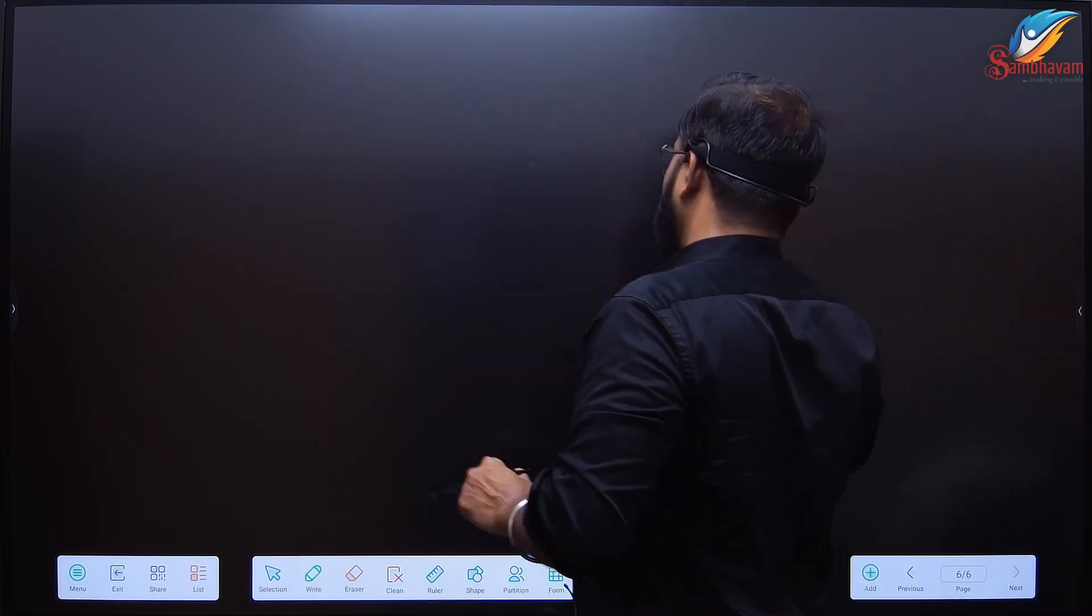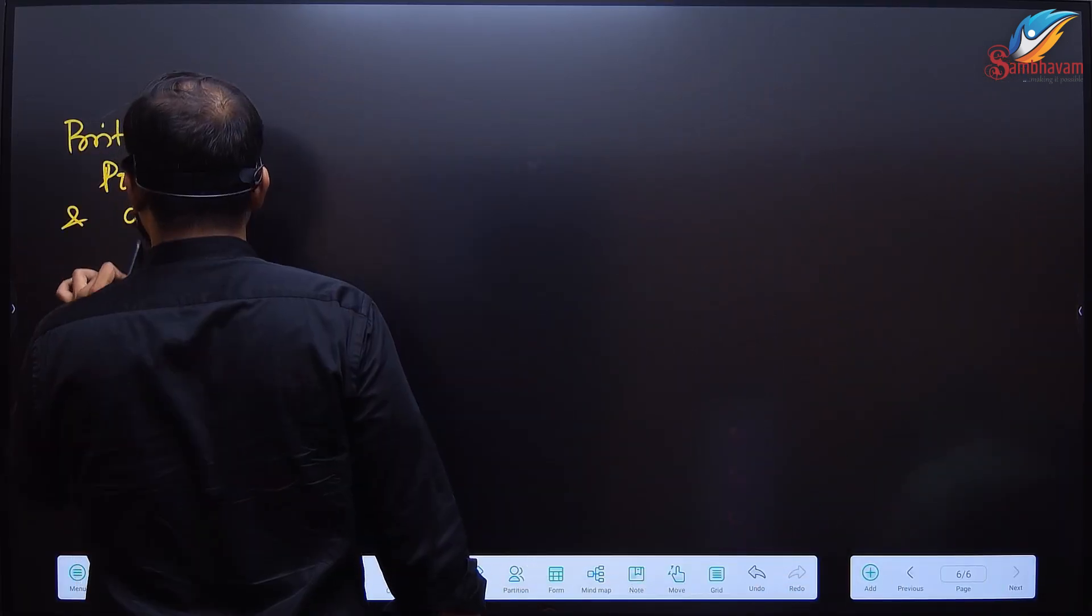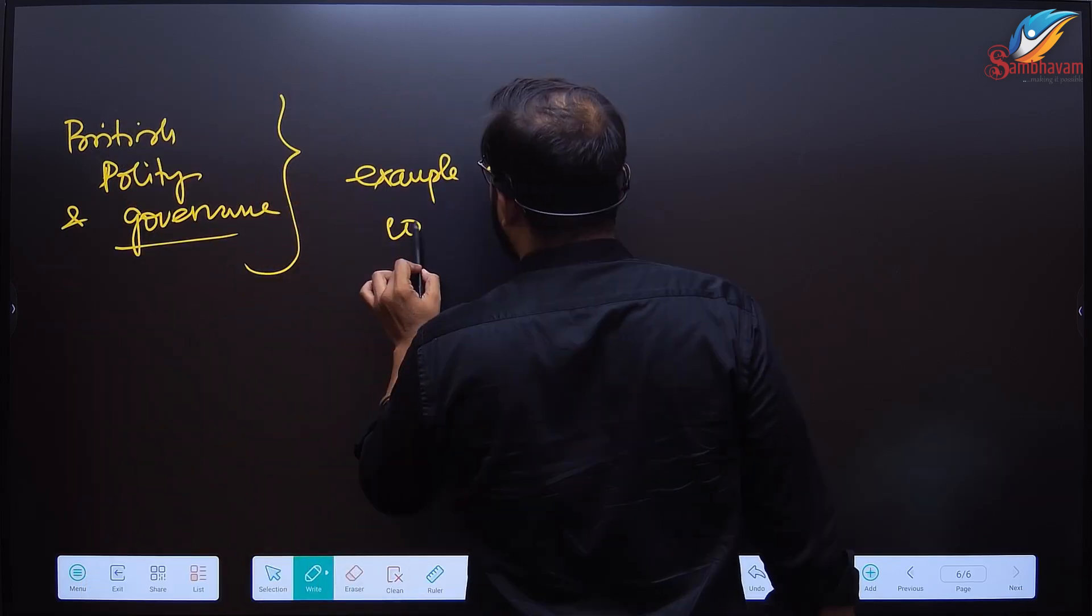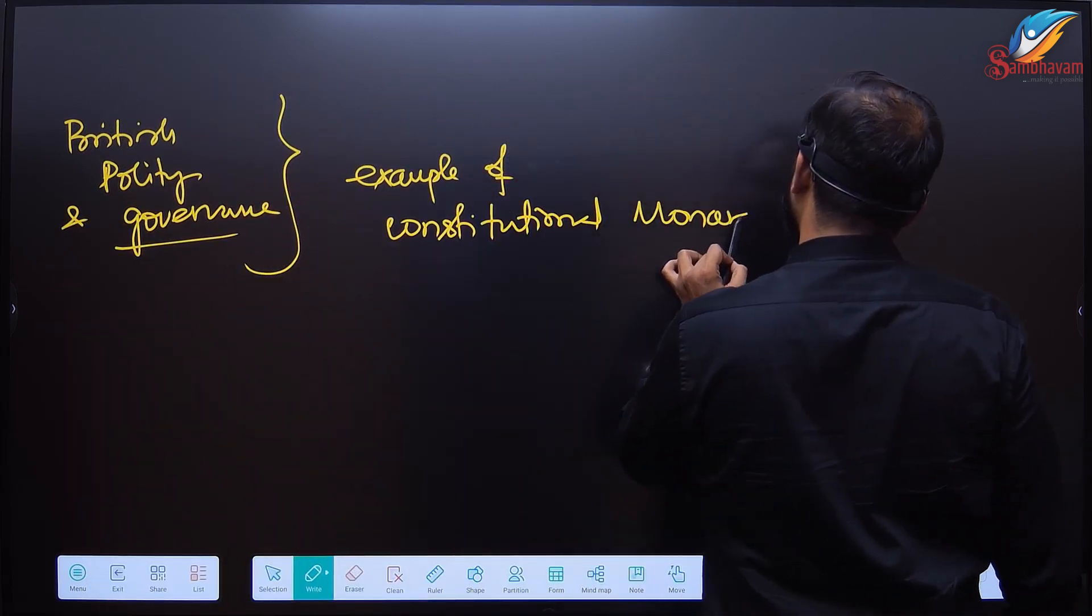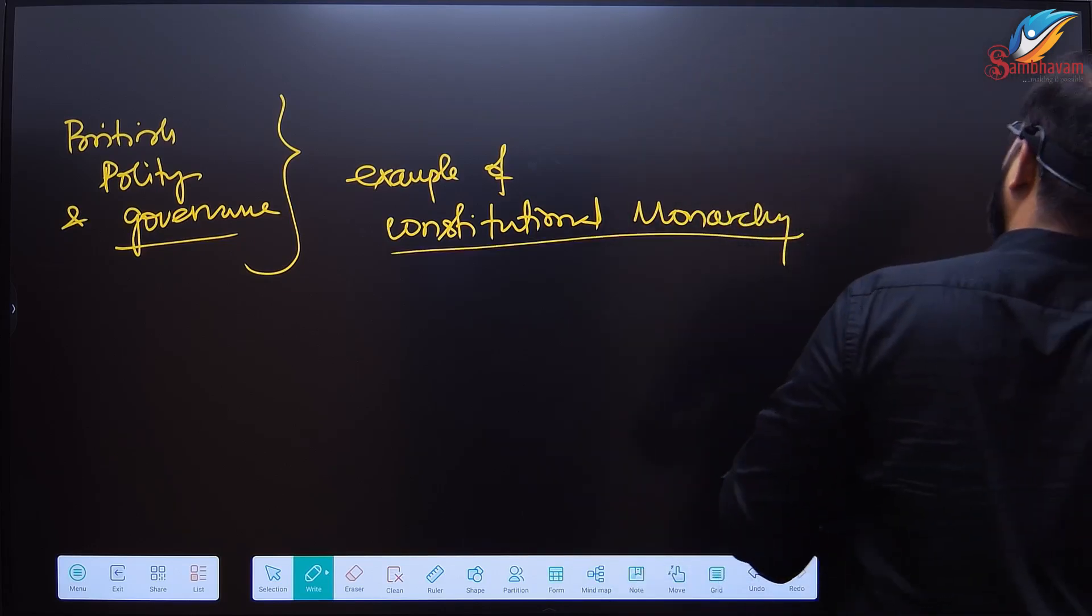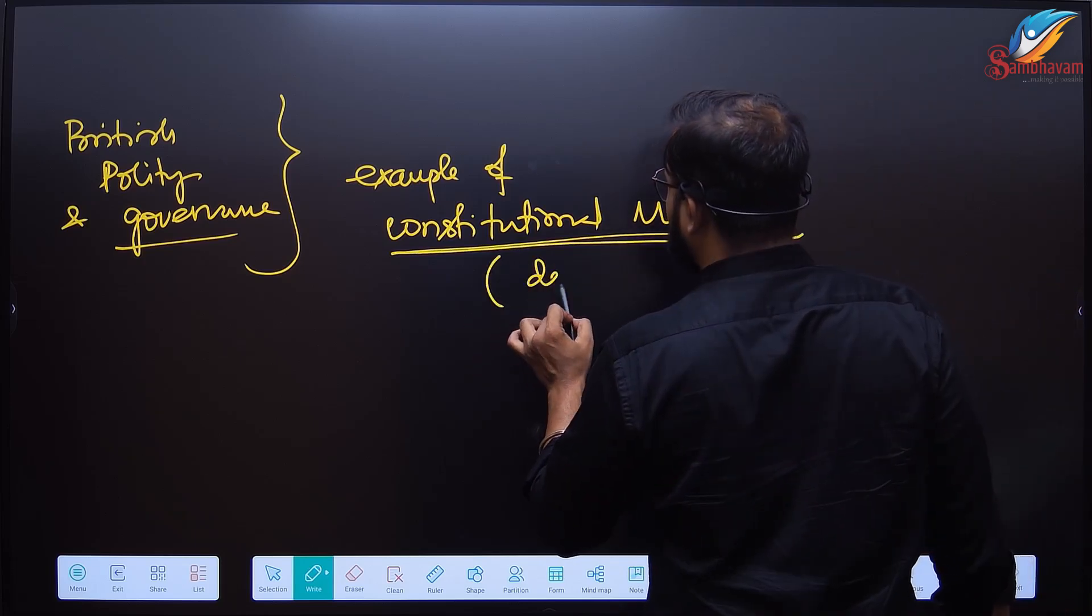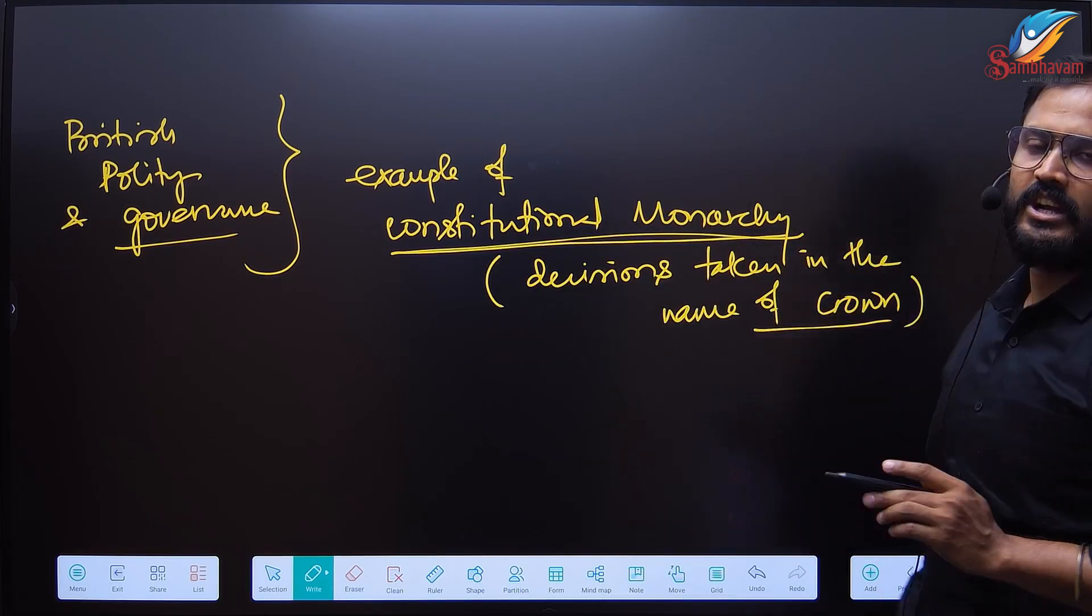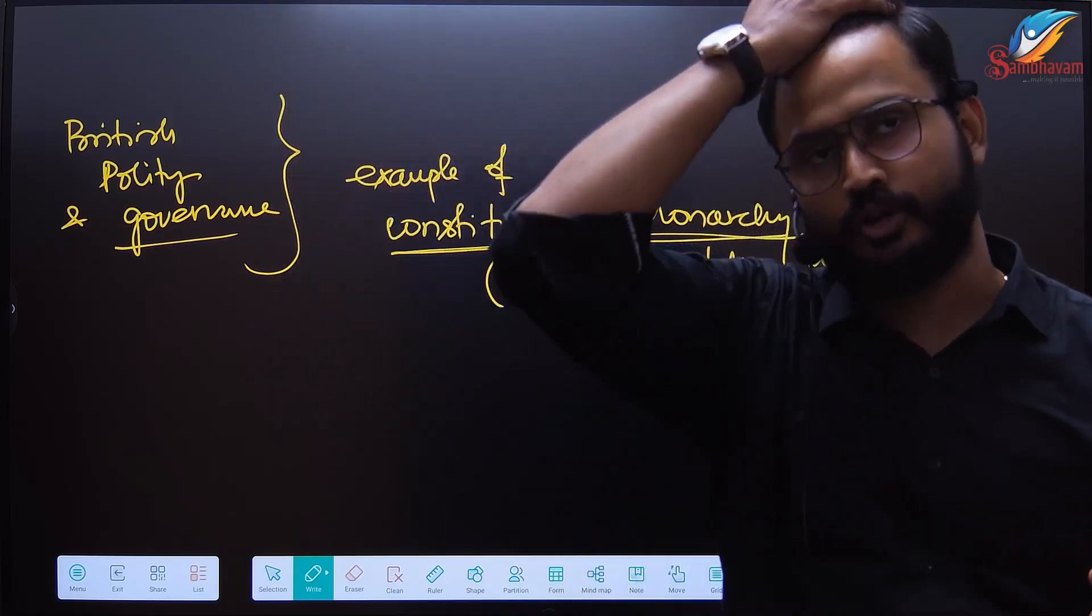Let us understand the British polity and governance, which was an example of constitutional monarchy. The Crown was the nominal head. That means decisions were taken in the name of the Crown. Symbolically, the Crown is the fountainhead of all authority, but who actually creates these decisions? The law-making force is Parliament.